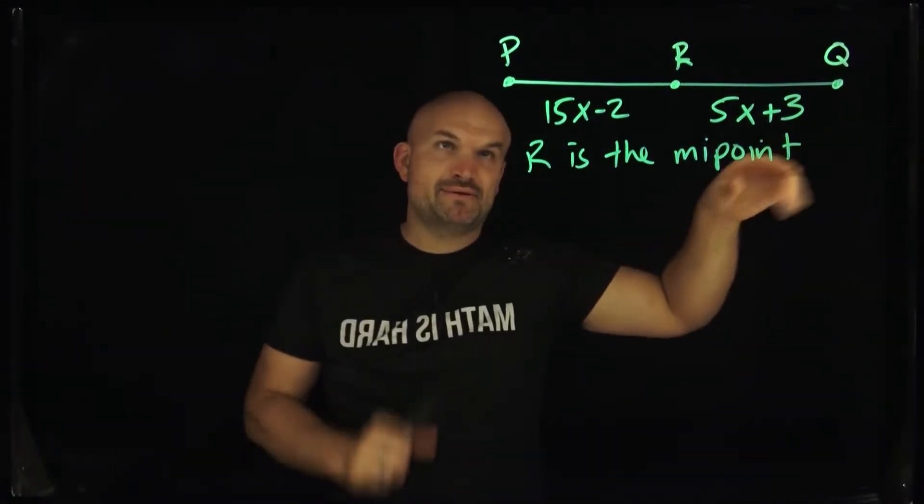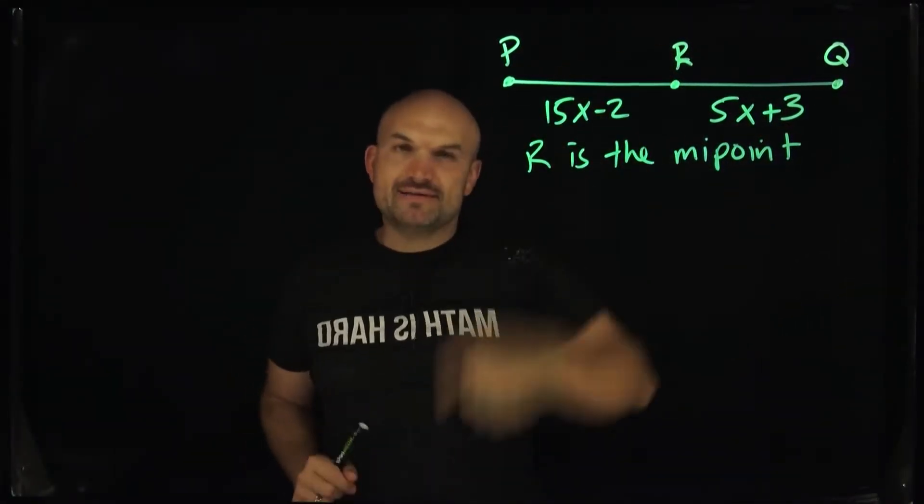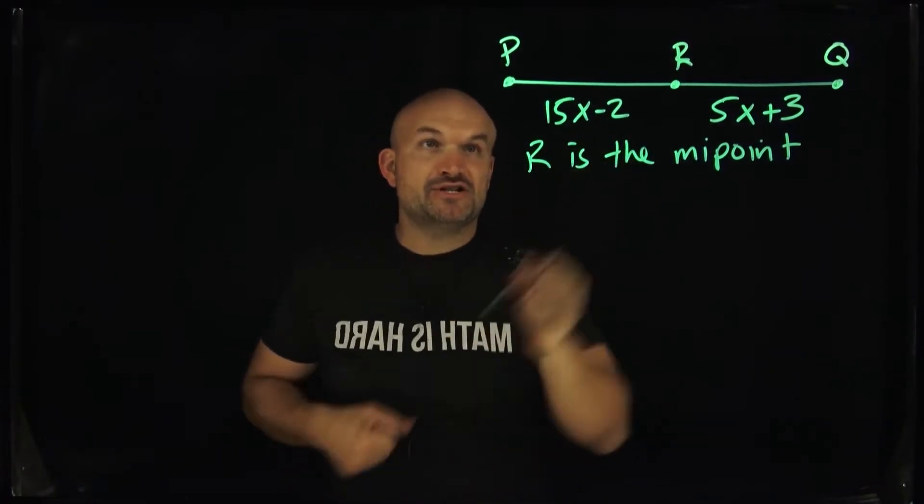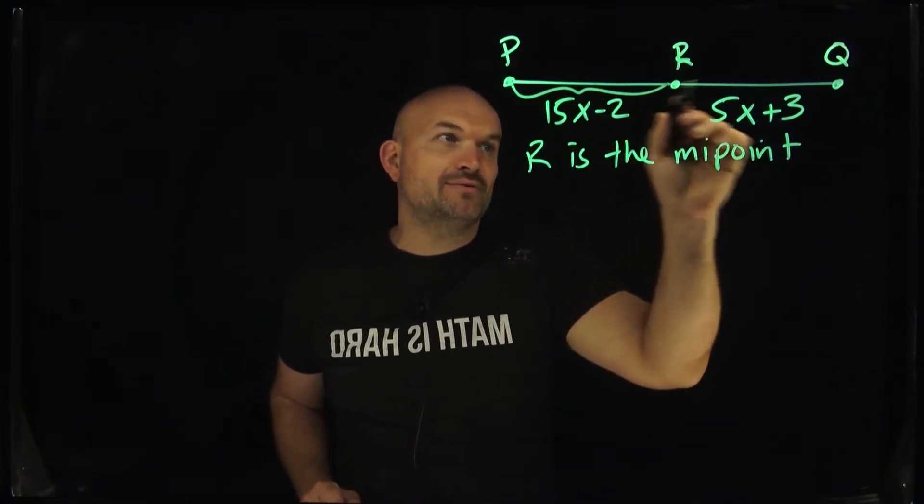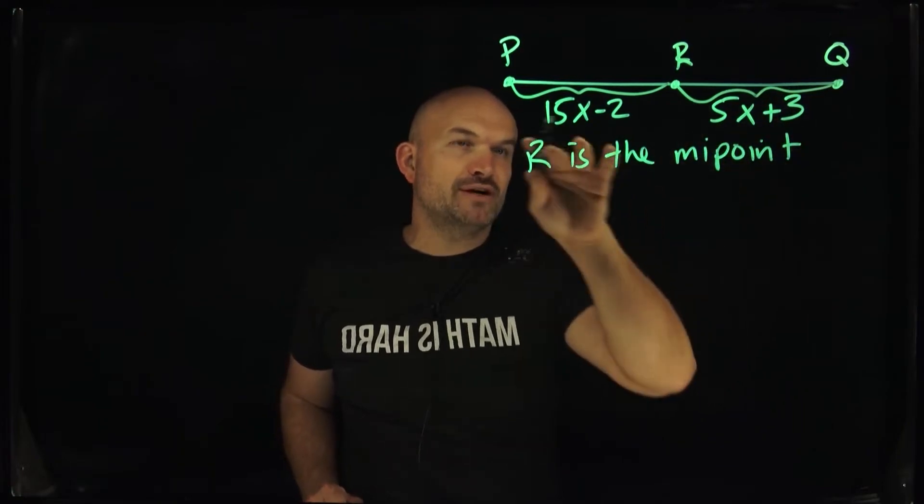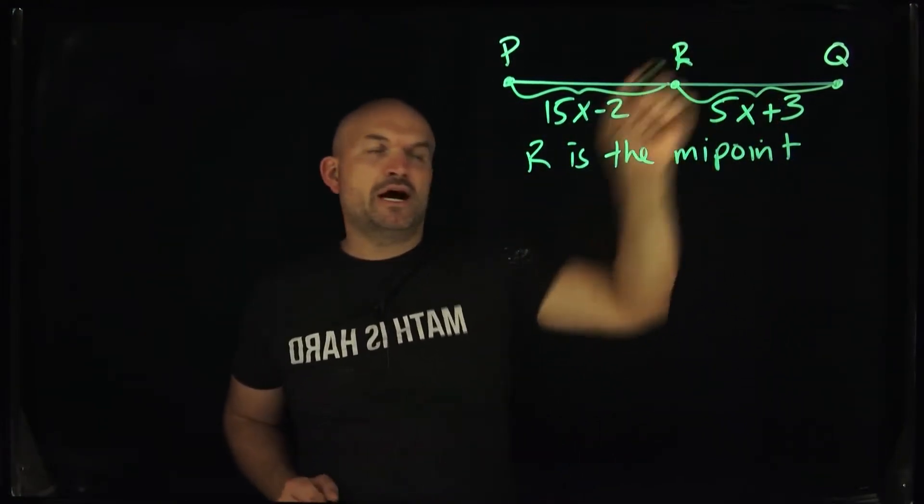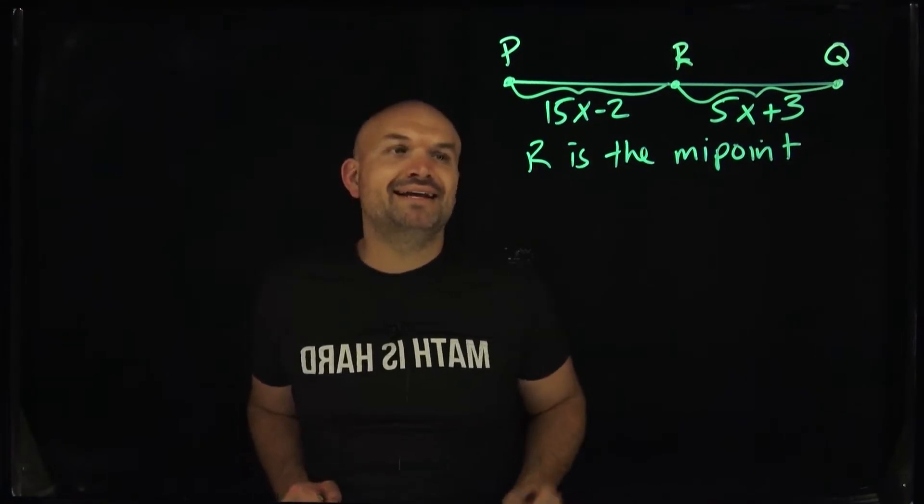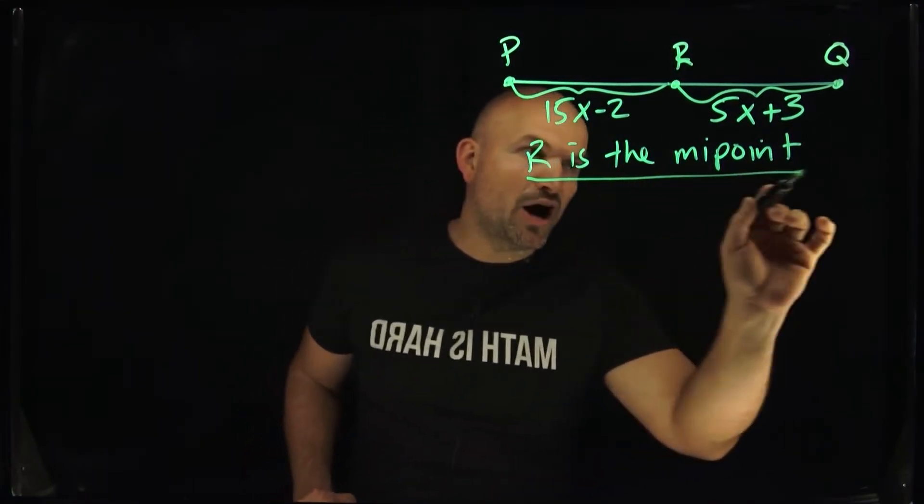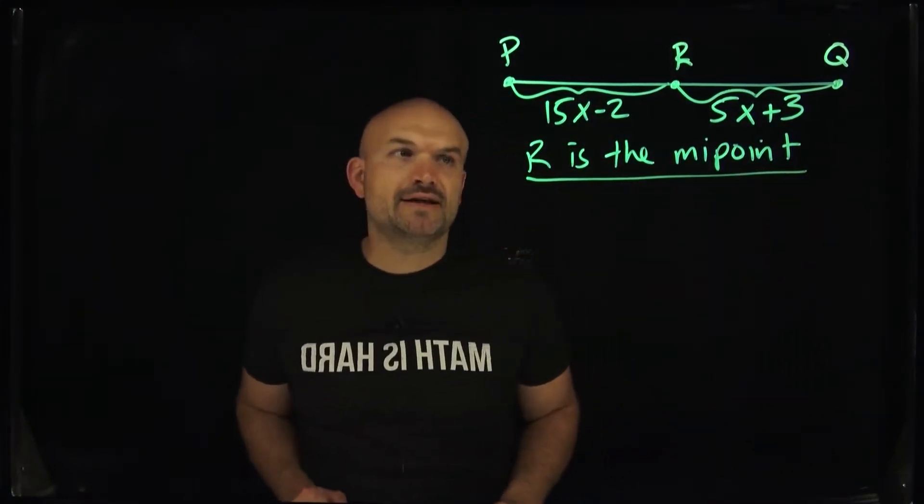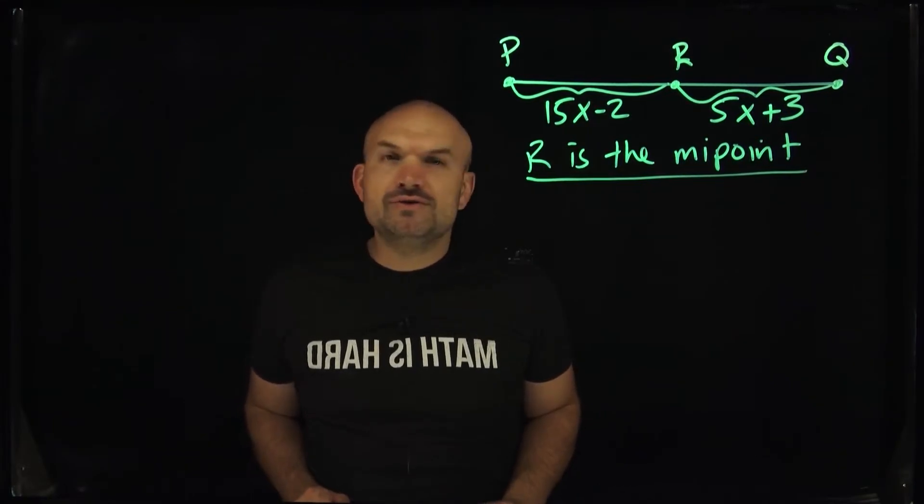All right, in a problem like this, you can see we have a line segment PQ, and it's saying R is the midpoint. And then we're given two expressions which are going to represent their length, right? Two little algebraic expressions here. 15x minus 2 is PR, and 5x plus 3 is going to be RQ. Now, really the main important piece of information is right here: R is the midpoint. Because you have to think, why would that be given to us? And what can we use with that understanding?